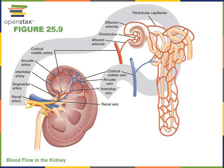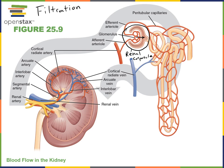There are three major processes that contribute to urine formation. The first is filtration, and filtration occurs at the renal corpuscle, where fluid is forced out of the blood in the glomerular capillaries into Bowman's capsule. After filtration, the liquid in the nephron is known as filtrate. Filtrate is modified through reabsorption and secretion.